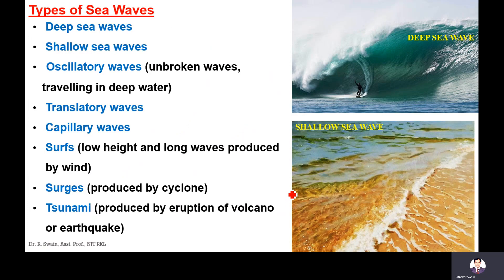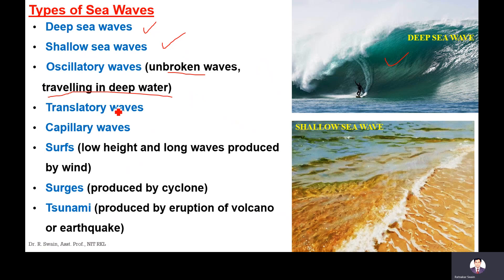The different types of sea waves include deep sea waves, which occur at very high depth; shallow sea waves, which occur at very small depth; oscillatory waves, which are unbroken waves traveling in deep water; translatory waves; capillary waves; surfs, which are low-height, long waves produced by wind; surges, which are produced by cyclones; and tsunamis, which are produced by volcanic eruptions and earthquakes.